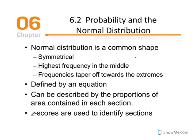Chapter 6, Probability, Part 2: Probability and the Normal Distribution. The normal distribution is a common shape. It entails the following characteristics: a normal distribution is symmetrical, the highest frequency is in the middle, and frequencies taper off toward the extremes.